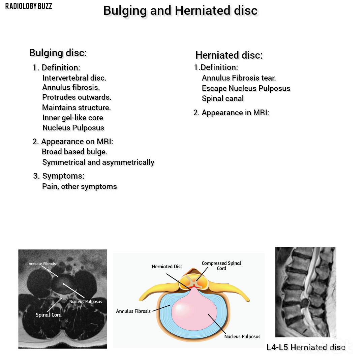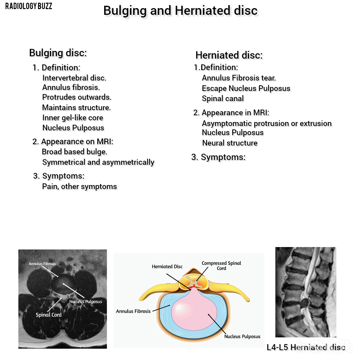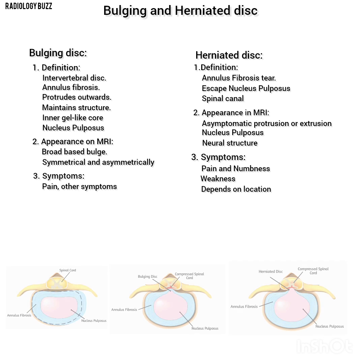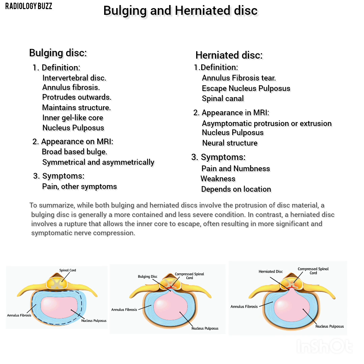Appearance on MRI: the disc appears as a focal asymmetric protrusion or extrusion of the nucleus pulposus. This can often be seen as a distinct mass that may compress adjacent neural structures. Symptoms: herniated discs are more likely to cause pain, numbness, or weakness due to the compression of nearby nerves. The severity of symptoms depends on the location and extent of the herniation.